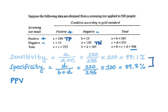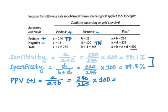Now let's calculate our predictive values. The positive predictive value is the proportion of people who tested positive that do have the outcome. The formula is A divided by A plus B, which equals 240 divided by 265, multiplied by 100, to yield a 90.6 percent positive predictive value.